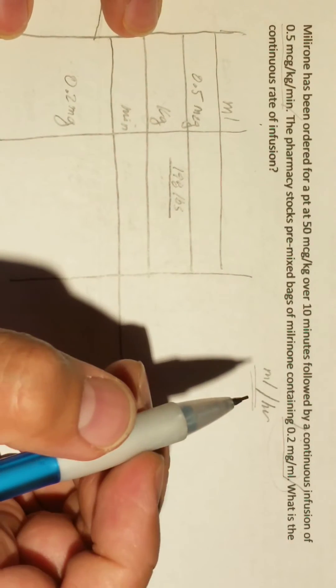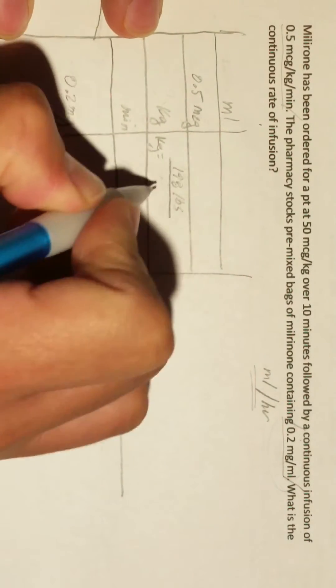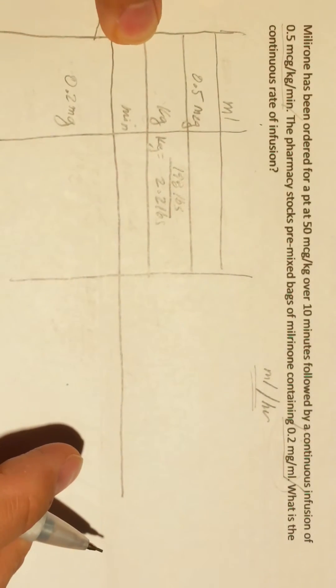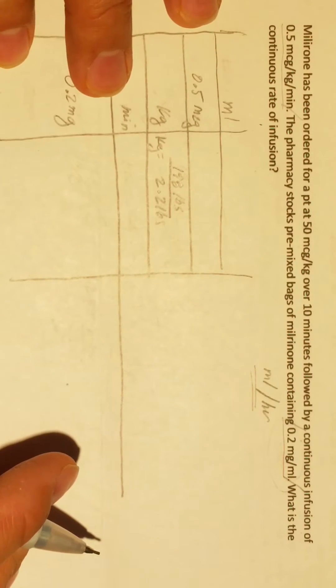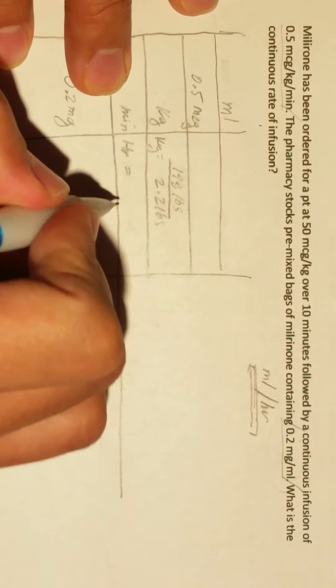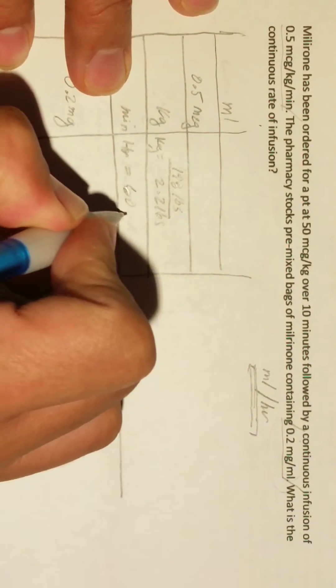We need to know the patient's weight, so let's say the patient weighs 198 pounds. One kilogram is equivalent to 2.2 pounds. And since we're solving for mL per hour, one hour is equivalent to 60 minutes.